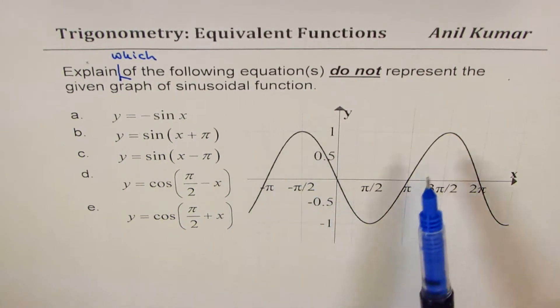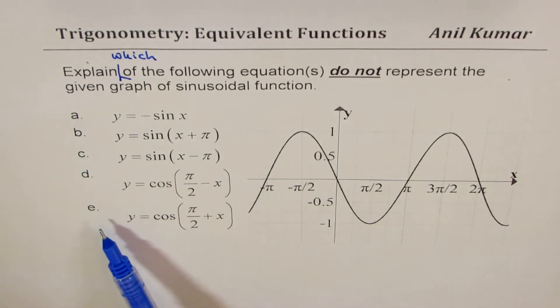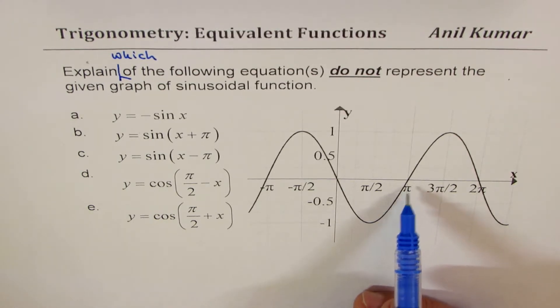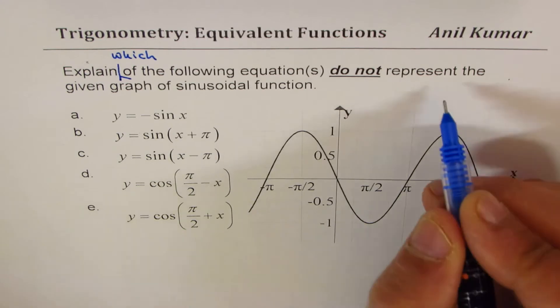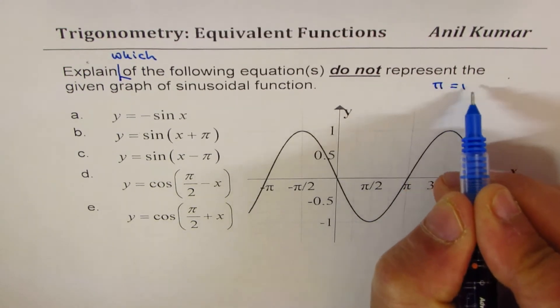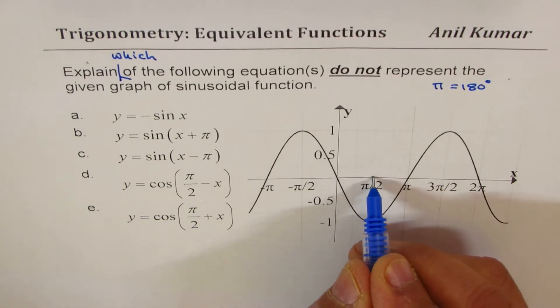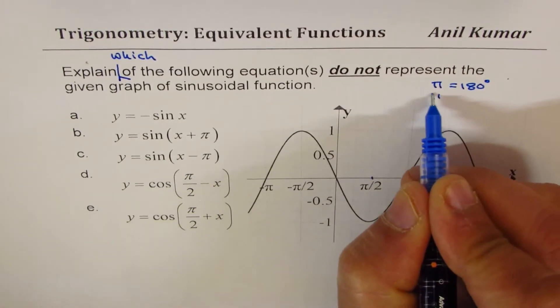So that's the graph given to you and these are five choices. Some of you who do not understand pi can write pi as 180 degrees and then answer the question, okay, so pi by 2 will be 90 degrees.